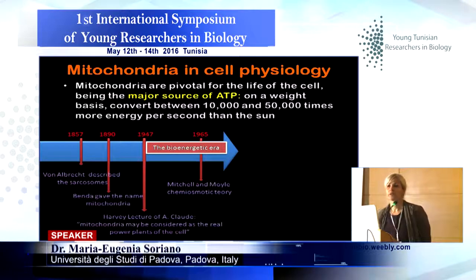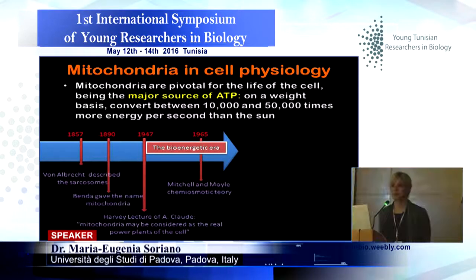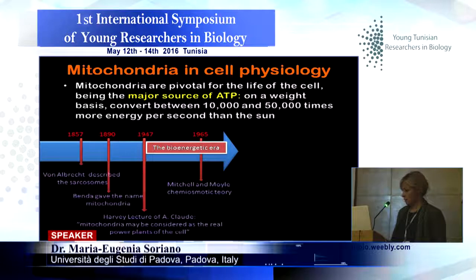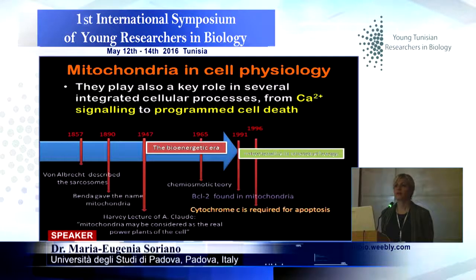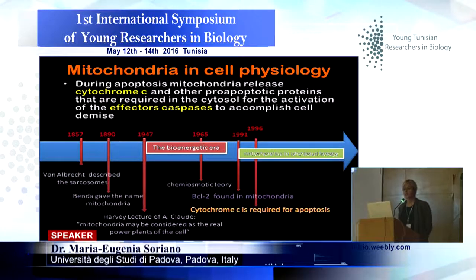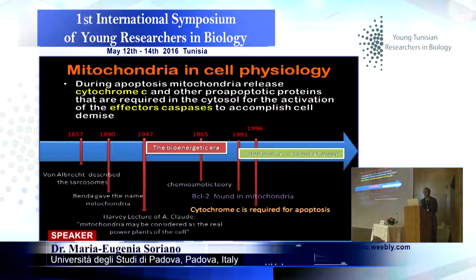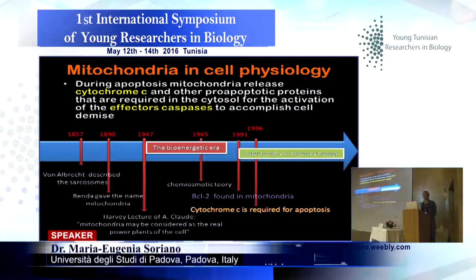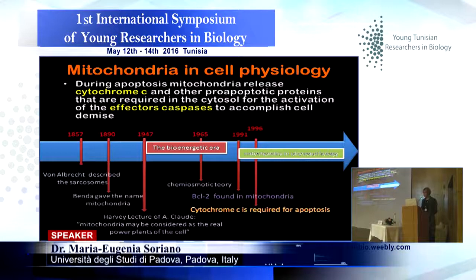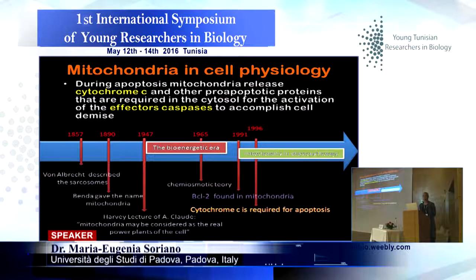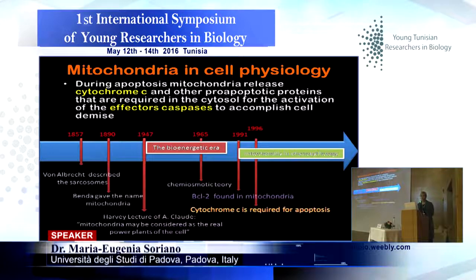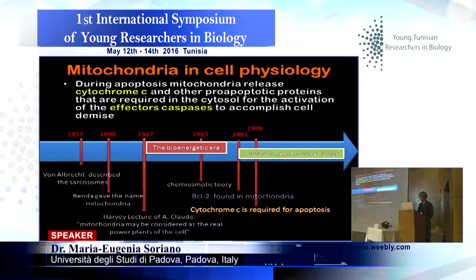Mitochondria are very important. As you know, they are the main producers of energy in the form of ATP. But this is not the only reason. They are also very important in metabolites, in calcium homeostasis, and in programmed cell death. Mitochondria contain cytochrome C, which during apoptosis is released, activating caspases and amplifying or inducing the apoptosis pathway.